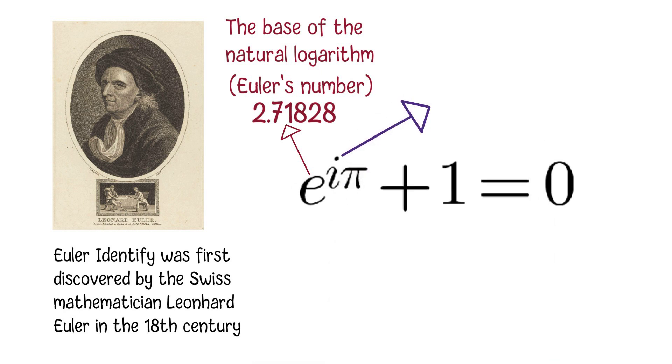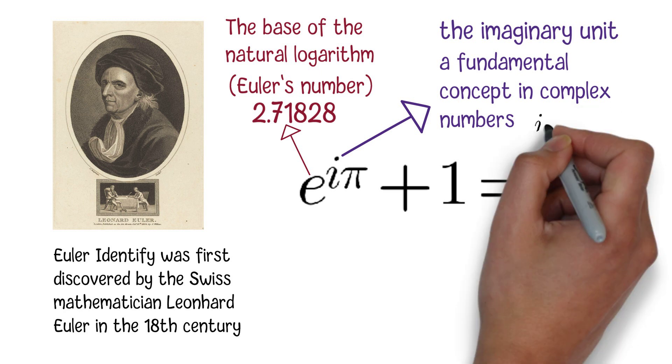I is the imaginary unit, which is a fundamental concept in complex numbers, where I is defined as the square root of minus 1.